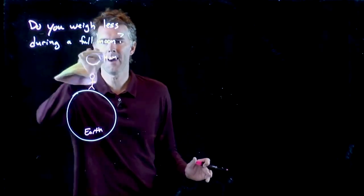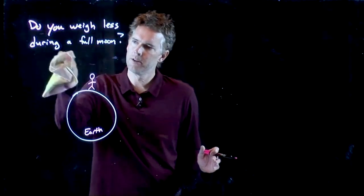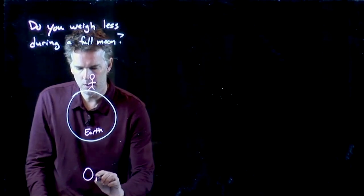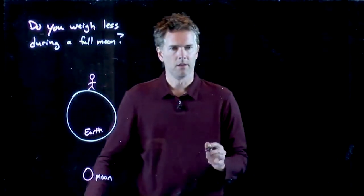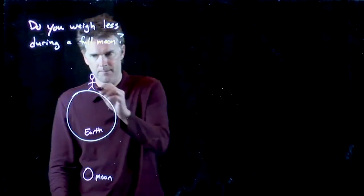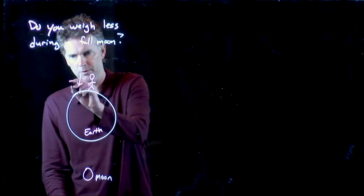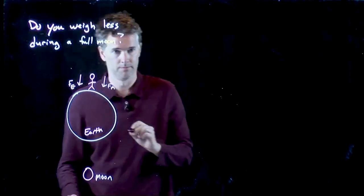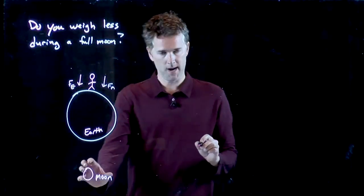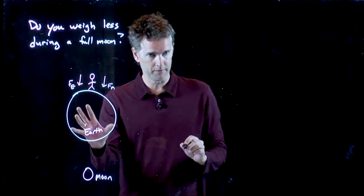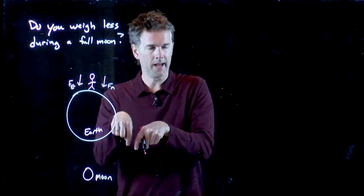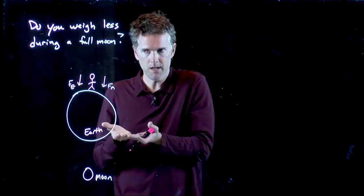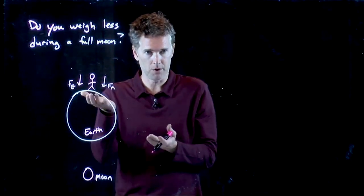So what we said was gravity pulls on everything in the universe. So if I put the moon over here, then there are two things pulling on me, right? I have the force due to the Earth, but I also have the force due to the moon, which, granted, it's going to be less than the force of the Earth, but they're still in the same direction. And if I have more force pulling me down, then that scale underneath me, pushing back up, has to push harder.